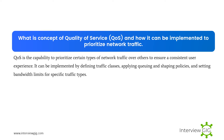What is the concept of Quality of Service, QoS, and how can it be implemented to prioritize network traffic? QoS is the capability to prioritize certain types of network traffic over others to ensure a consistent user experience. It can be implemented by defining traffic classes, applying queuing and shaping policies, and setting bandwidth limits for specific traffic types.